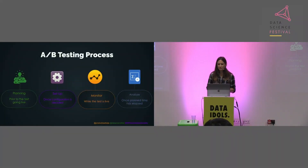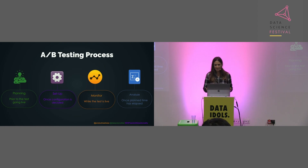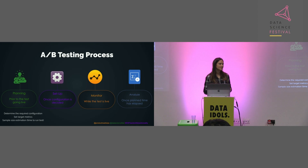The A/B testing process can be broken into four parts. The first is planning, done prior to the test going live. We then have setup, once the configuration is decided. Then monitoring, done while the test is live. And finally analysis, done once the planned amount of time has elapsed. In planning, we determine the required configuration, set the target metrics, do sample size estimation, and decide how long we want to run the test.